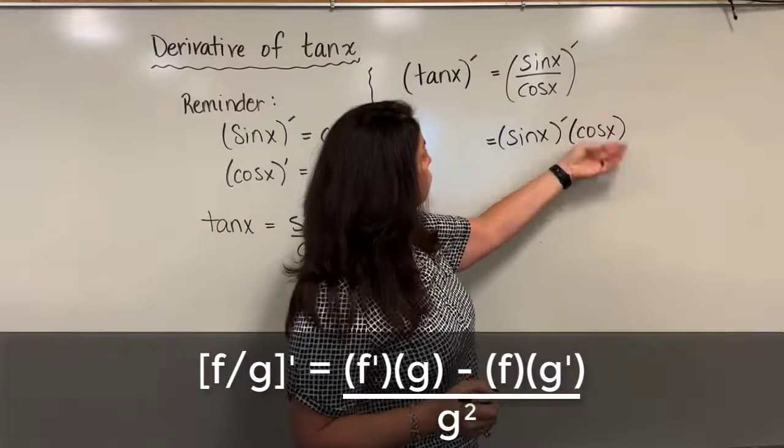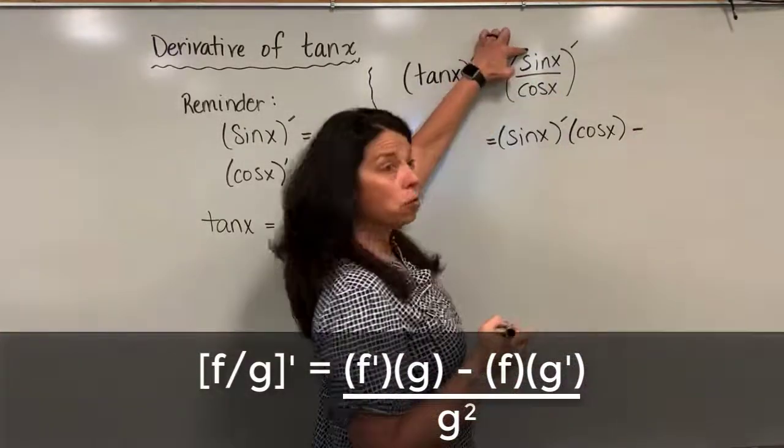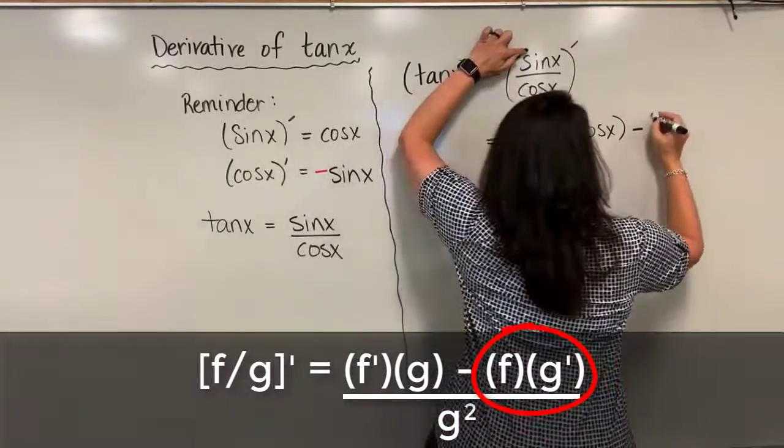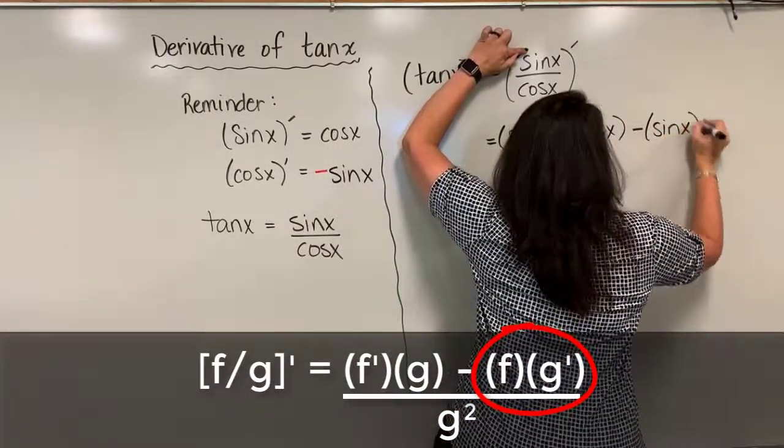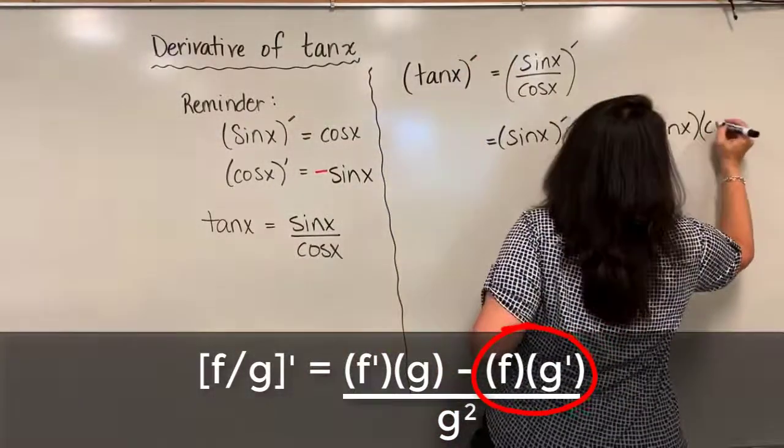And once I do that piece I need to subtract off the numerator as is, so sine x times the derivative of the denominator cosine x.